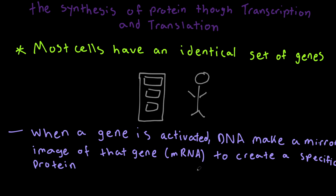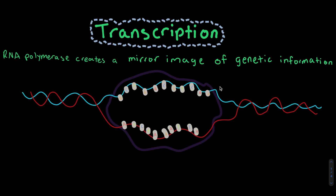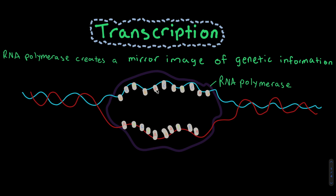Now let's talk about transcription. This is a process in which our RNA polymerase — just a type of enzyme — creates a mirror image of genetic information from the DNA. And this mirror image will become our mRNA. Looking at this picture, the purple structure represents our RNA polymerase. The blue and red line represents our DNA, coiled around. Our RNA polymerase will act as a zipper, unwinding the double helix to expose the nucleotides, specifically our nitrogenous bases.